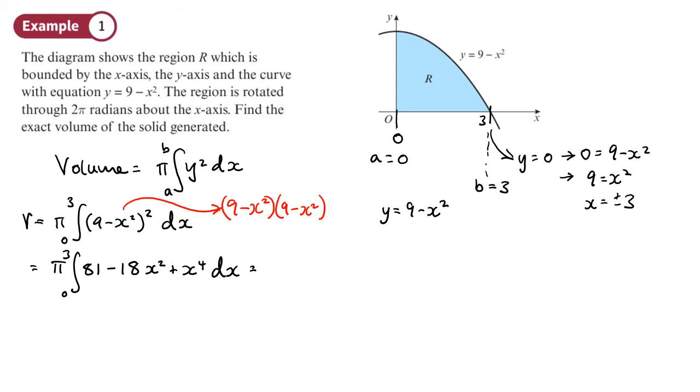We're ready now to do the integration of that. So 81 will become 81x, 18x squared where you add 1 to the power, divide by the new power, so that will be 18 divided by 3 which is negative 6x cubed. For the next one you add 1 to the power so it becomes x to the 5, divide by the new power so we've got a fifth, like that. And that's between the limits of 0 and 3.